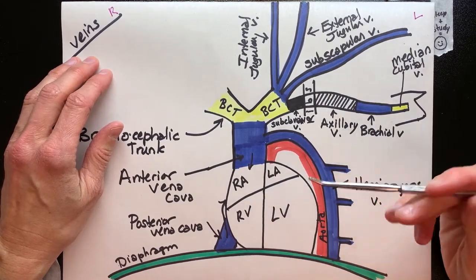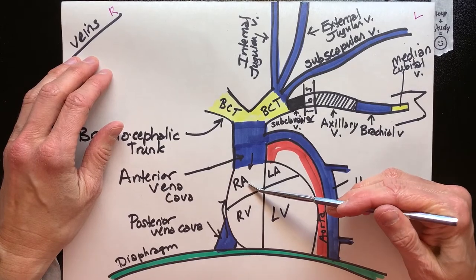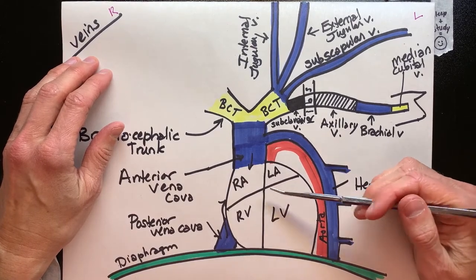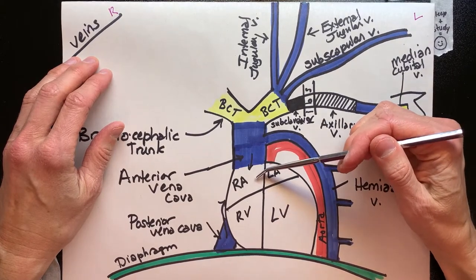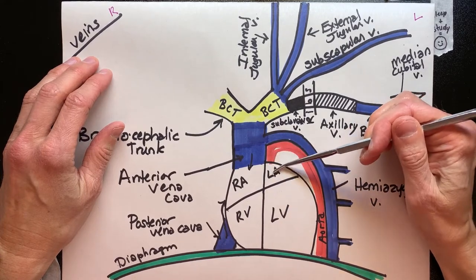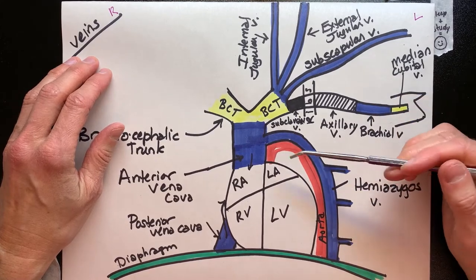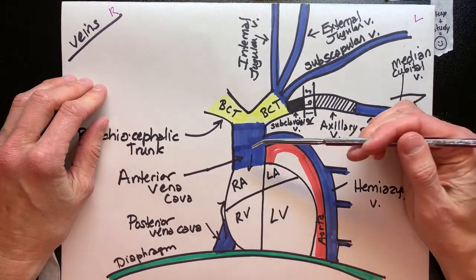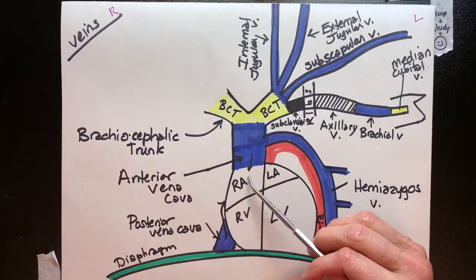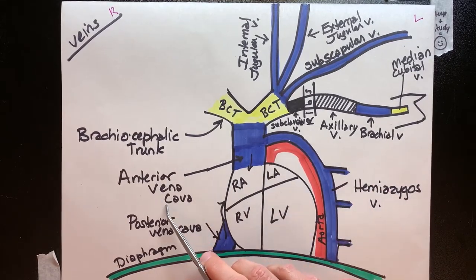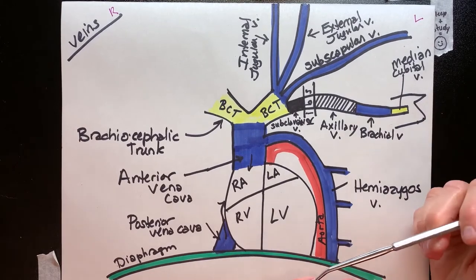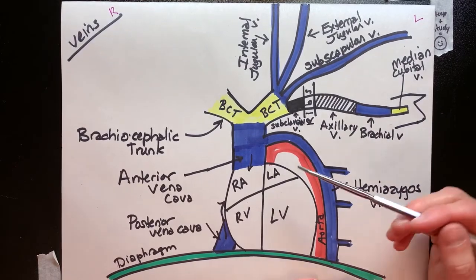We note the heart chambers we're already familiar with: the right atrium, left atrium, right ventricle, and left ventricle. Blood can only return to the heart through an atrium — either deoxygenated on the right side or oxygenated on the left side before it goes out the aorta. Since we're talking about veins, we're coming into the heart on the right side. The right atrium receives both the anterior vena cava and the posterior vena cava — what you know as the superior and inferior vena cava in humans.